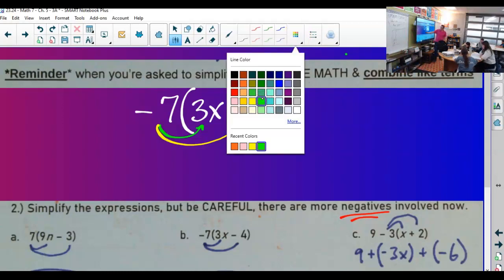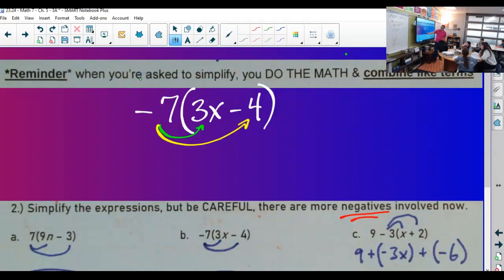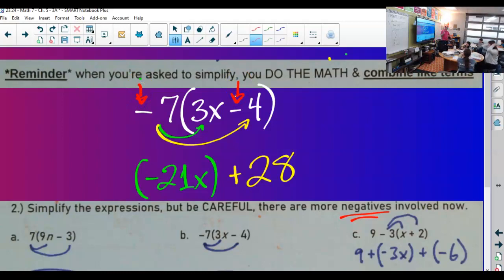So we end up doing our multiplication. Negative 7 times 3x - negative 21x. And negative 7 times negative 4 - positive 28. Some of you guys got the negative 21x, but then you had minus 28. A negative times a negative - this is why I've been trying to brainwash you to stop saying minus. That's negative 4.